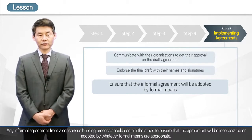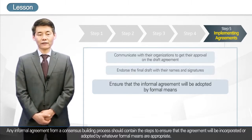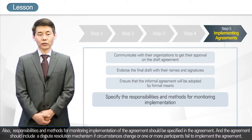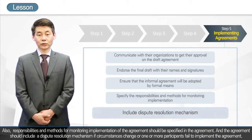Any informal agreement from a consensus-building process should contain the steps to ensure that the agreement will be incorporated or adopted by whatever formal means are appropriate. Responsibilities and methods for monitoring implementation of the agreement should be specified in the agreement, and the agreement should include a dispute resolution mechanism if circumstances change or one or more participants fail to implement the agreement.